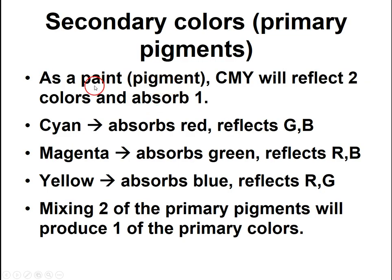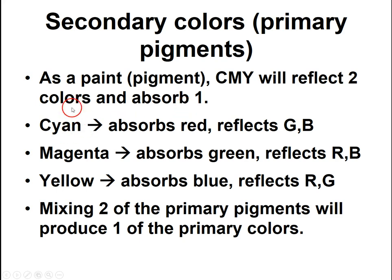Pigment is like paint, dye, or ink. If you look inside your printer, you'll notice the inks are cyan, magenta, and yellow. You can use those three inks to produce any variety of colors. When thinking about the colors you see with pigments, they reflect two colors and absorb one. Cyan absorbs red and reflects green and blue. Magenta reflects red and blue. Yellow absorbs blue and reflects red and green.